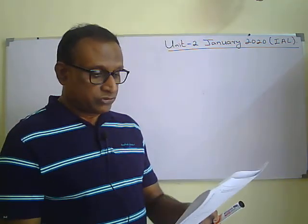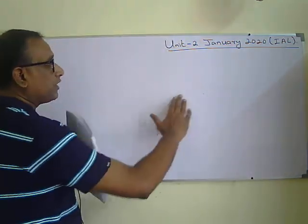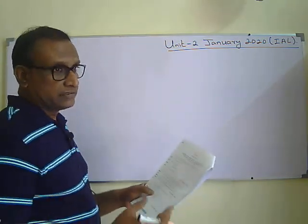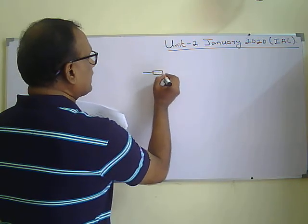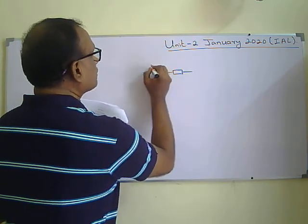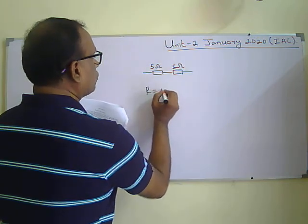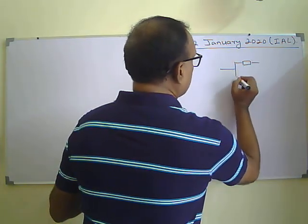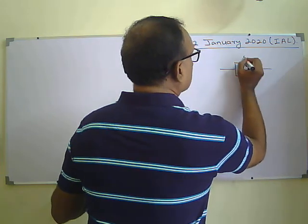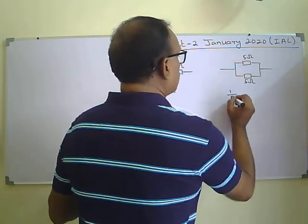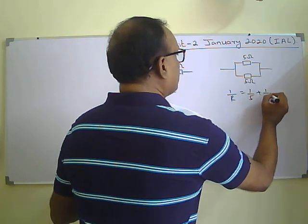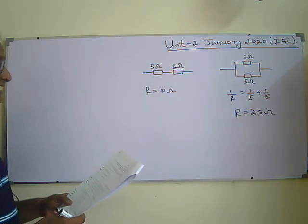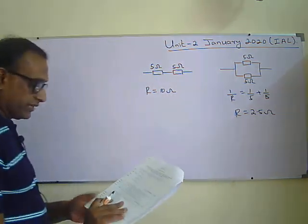Question three asks which row of the table shows the total resistance for two 5-ohm resistors. If you connect them in series, the equivalent resistance is 10 ohms. If you connect them in parallel, 1/R = 1/5 + 1/5, giving R = 2.5 ohms. The table gives four different options, and the correct answer is B: 10 ohms in series and 2.5 ohms in parallel.